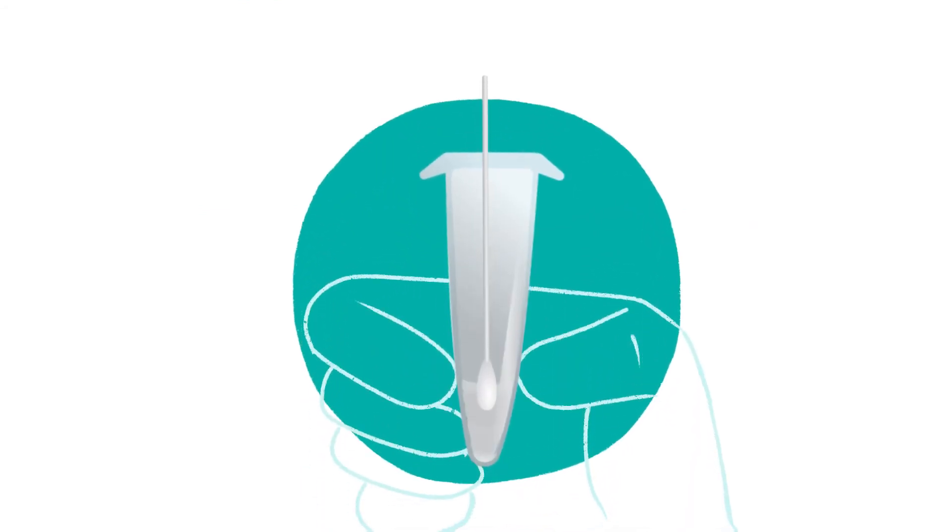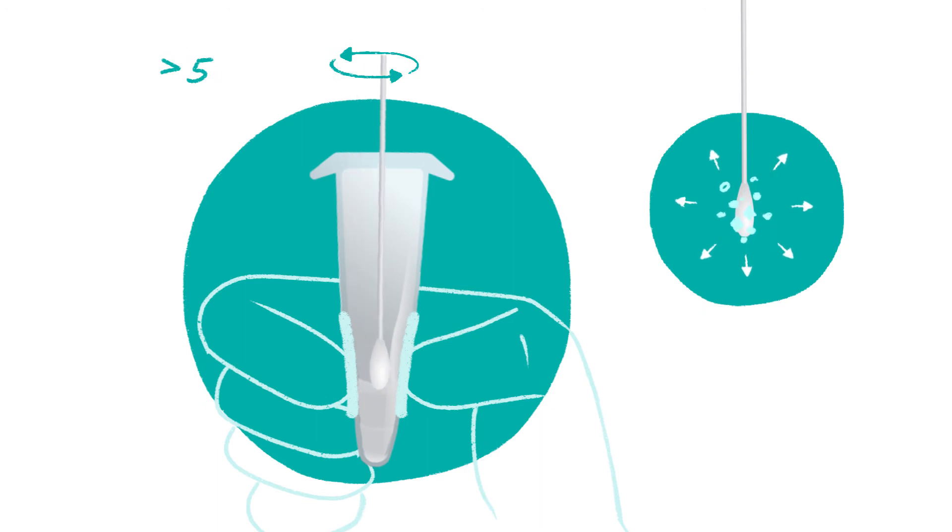Place the swab into the buffer vial and rotate to stir the swab vigorously at least five times. Further rotate to stir the swab another five times while squeezing the sides of the buffer vial.